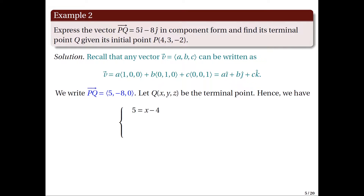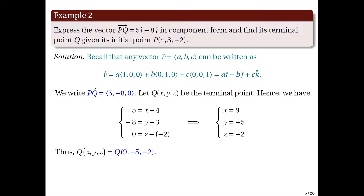For the second component, we have −8 = Y − 3. And for the third component, 0 = Z − (−2). Solving for X, Y, and Z, we find that the terminal point has coordinates (9, −5, −2).